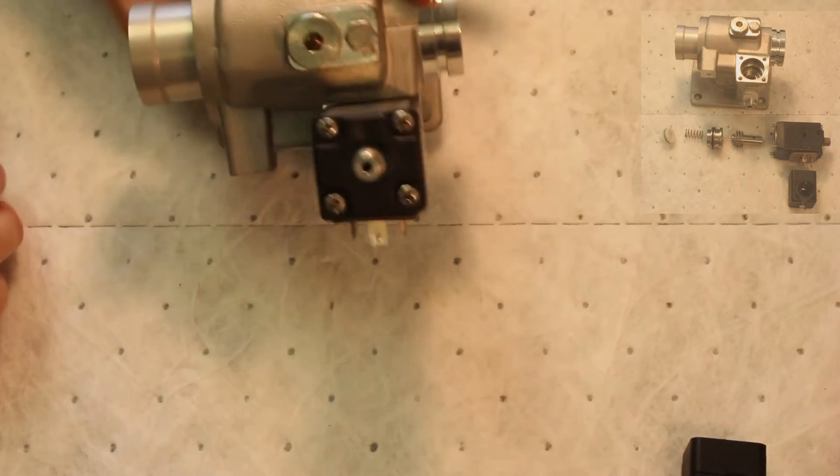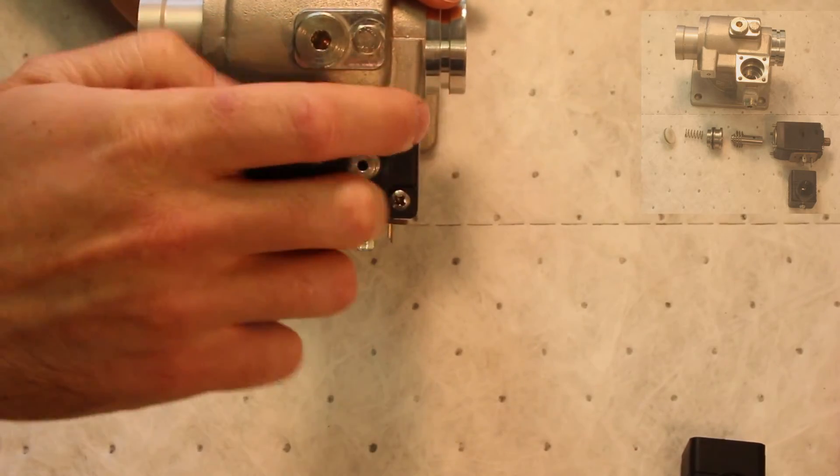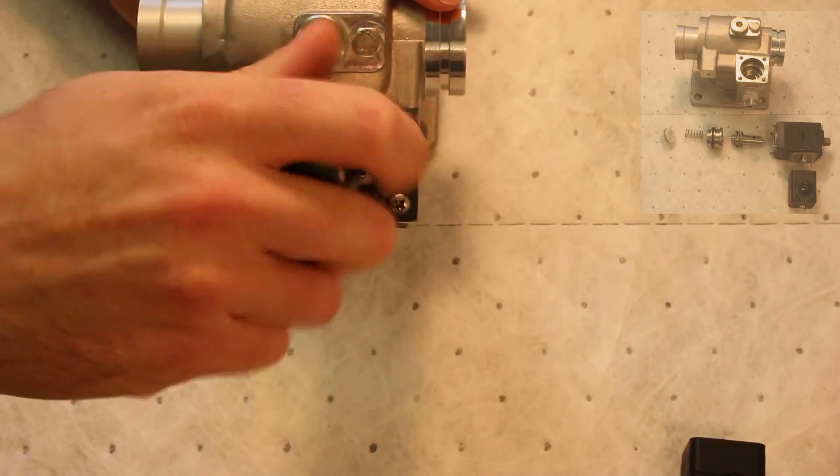Next, loosen and remove the four bolts located on top of the solenoid valve. Once the bolts are loose, remove them from the solenoid valve.